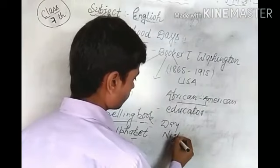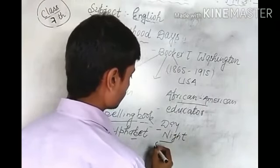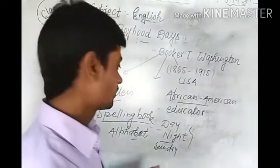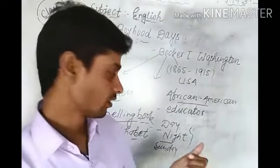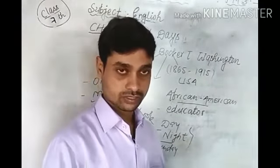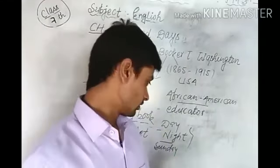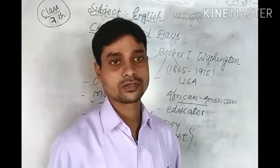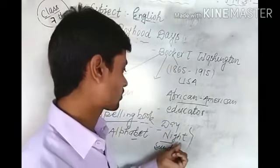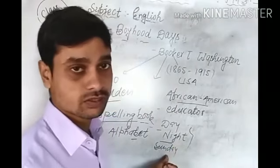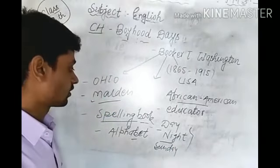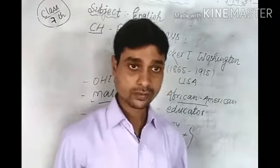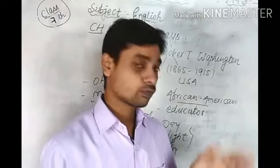There were three types of schools: day school, night school, and Sunday school. In day school, children from young age attended. In night school, older people — those who were 50 to 75 years old — studied. Sunday school was a special school held on Sundays.